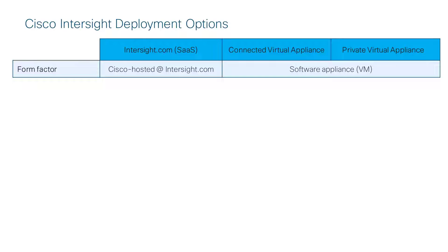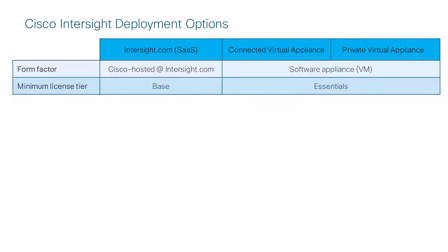Now let's look at the differences and similarities between the SaaS dashboard, the Connected Virtual Appliance, and the Private Virtual Appliance. In terms of form factor, the SaaS dashboard lives at Intersight.com — that's a cloud deployment. The CVA and PVA both come to you as an OVA file that you load up and run as a virtual machine. For minimum licensing, Intersight SaaS requires at least the base license to manage any device, while the CVA and PVA require the Essentials license.